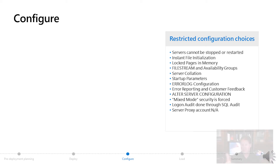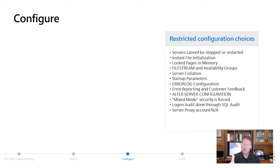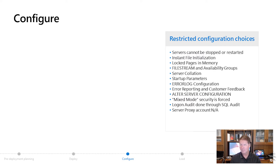Server collation — you can pick that in an MI deployment, but you can't change it past that point, so it's important you make that decision up front. All other options like ALTER SERVER CONFIGURATION, which you might use for NUMA deployments, don't make sense in a PaaS environment, so we don't allow that T-SQL syntax.